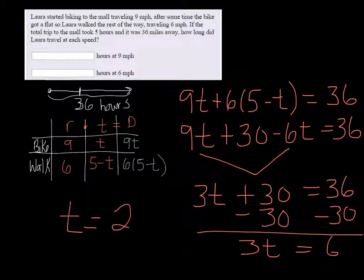So that means that she biked for two hours and five minus two would be three. That's how many hours that she walked.